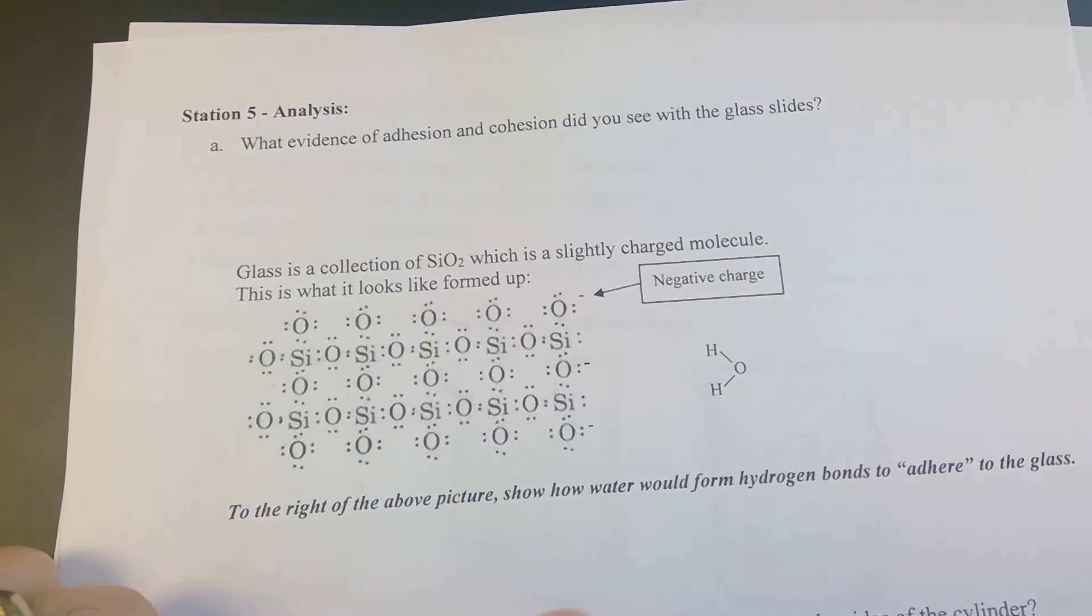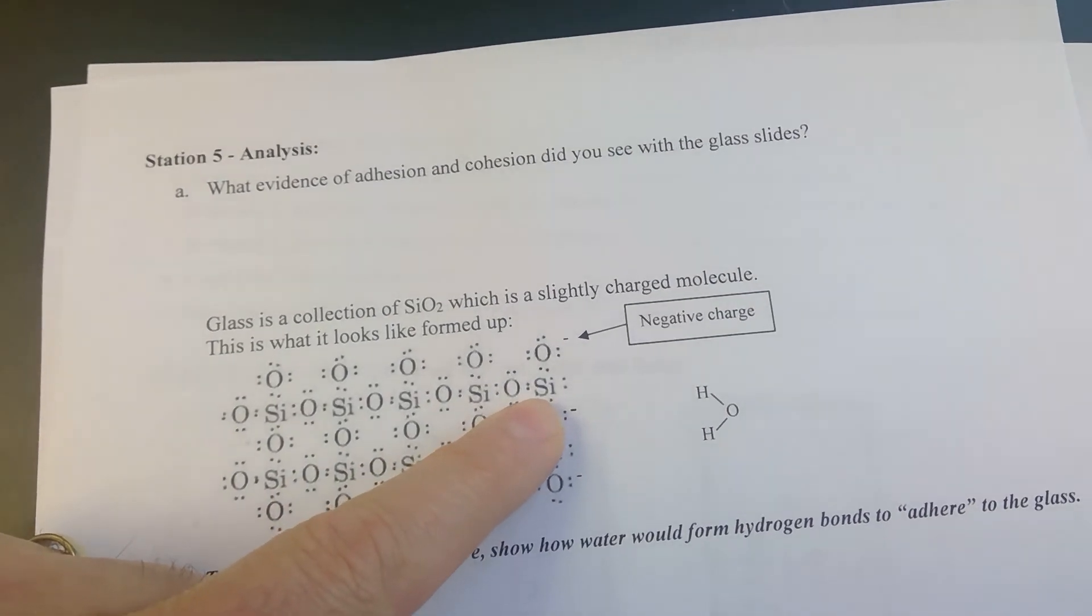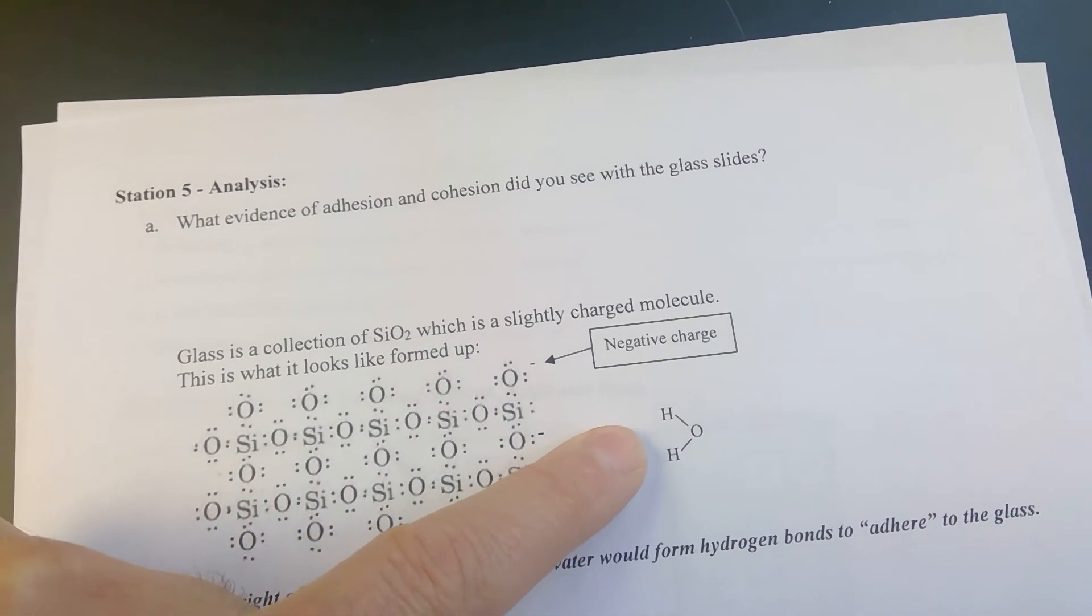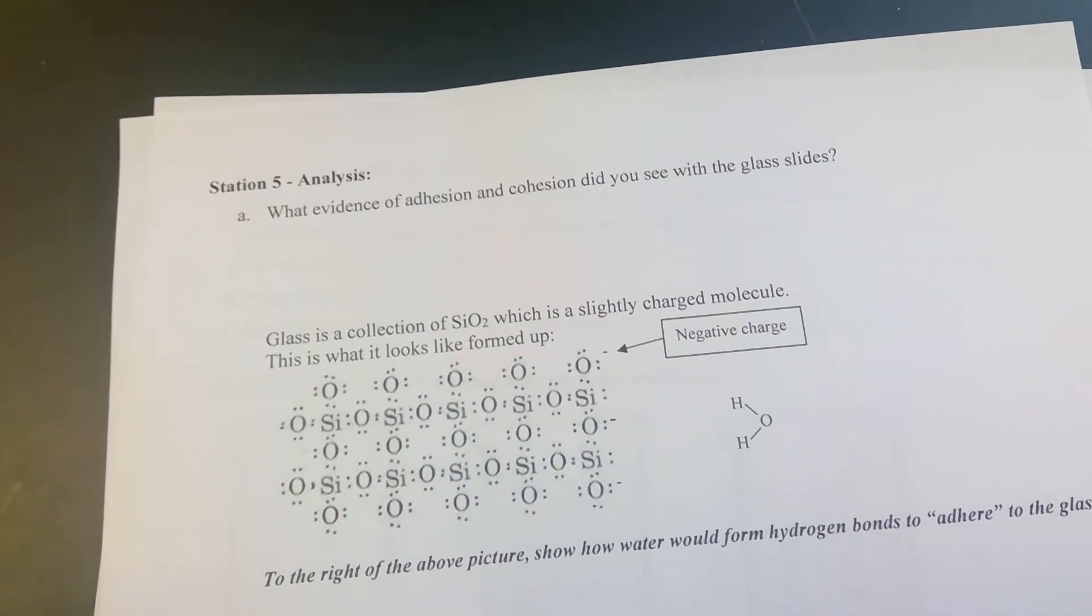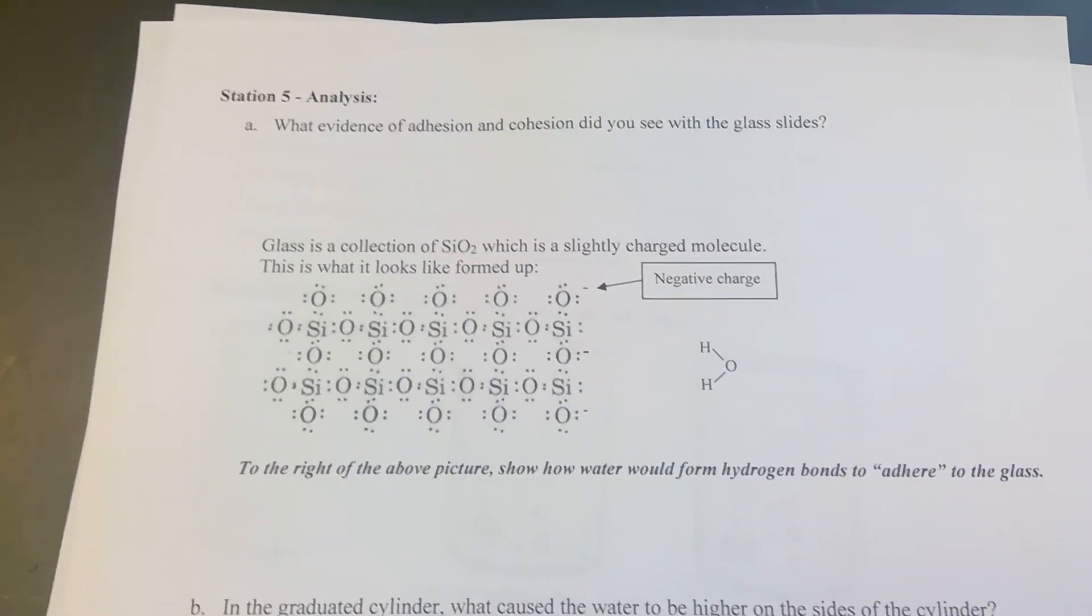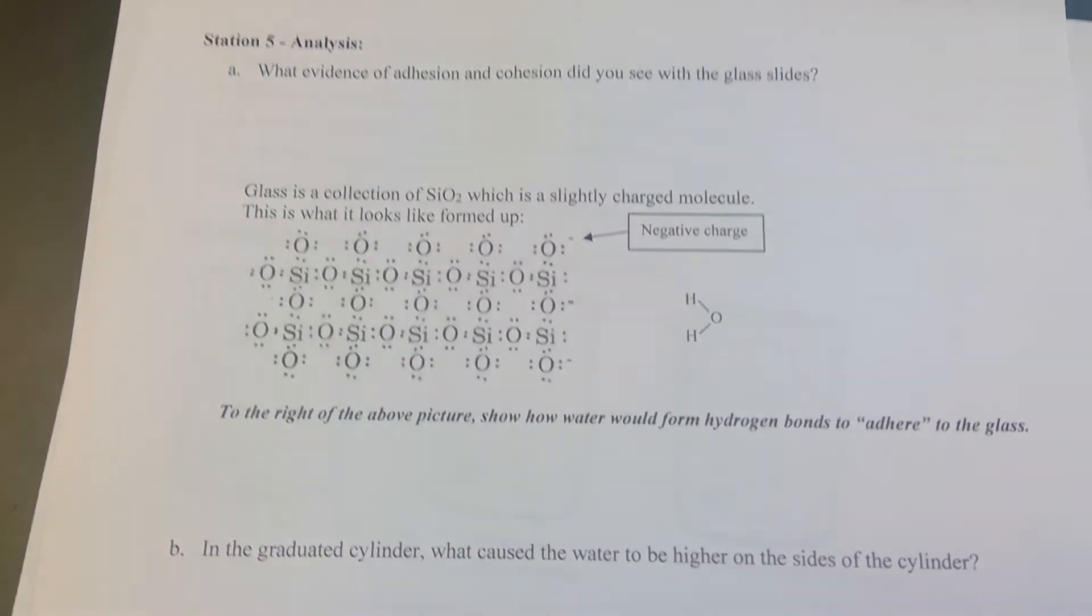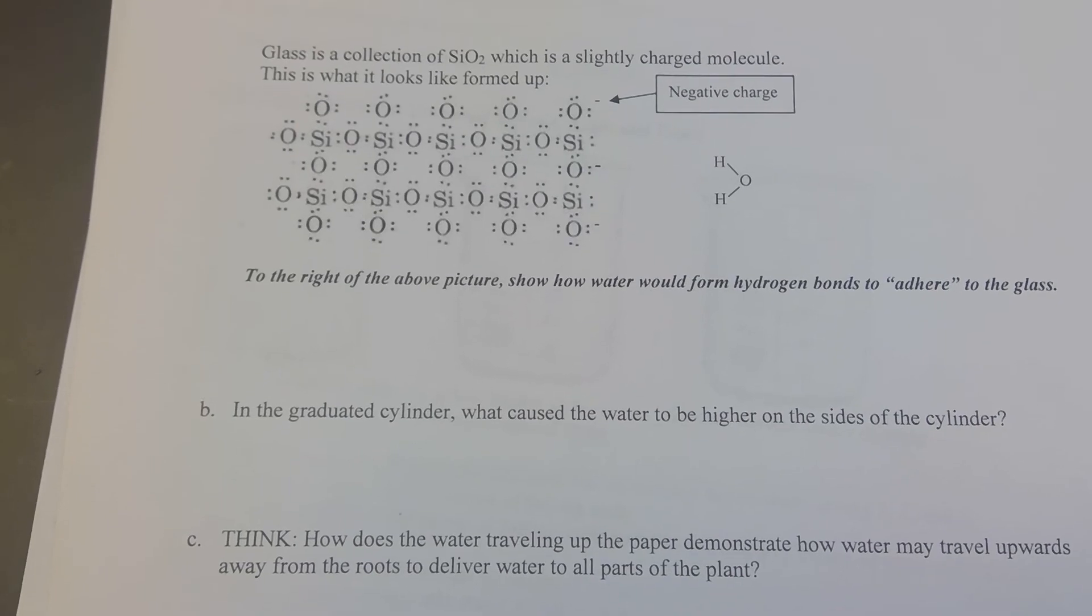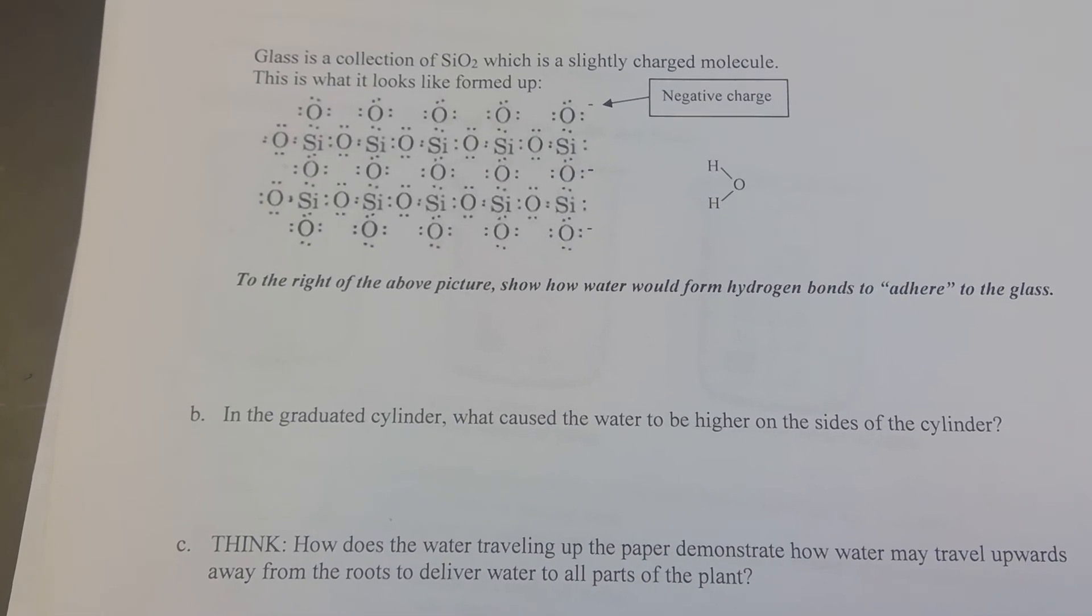You'll notice these are all negative charges of the oxygen. And then you should label what the charges would be of the water and then where a hydrogen bond would form. Then you want to answer about what happens in the graduated cylinder and why it does.